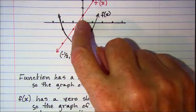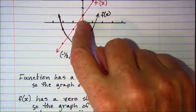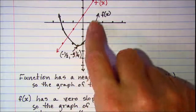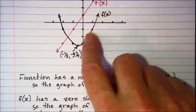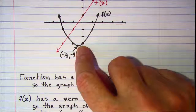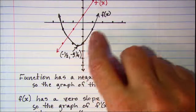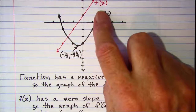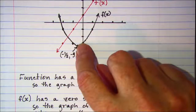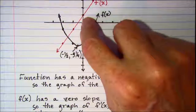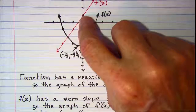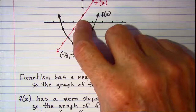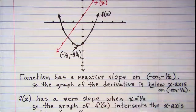On the right side of the parabola, my tangent line will have a positive slope at any given point. So my derivative — this red line right here — the graph of that will be above the x-axis.